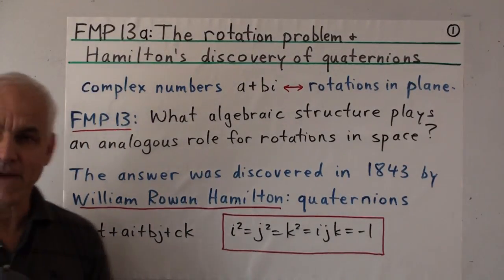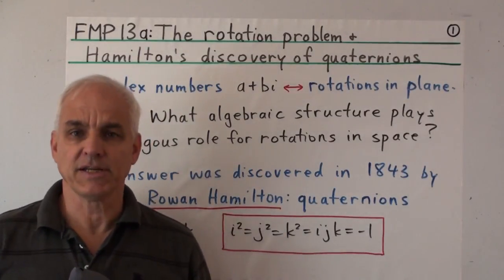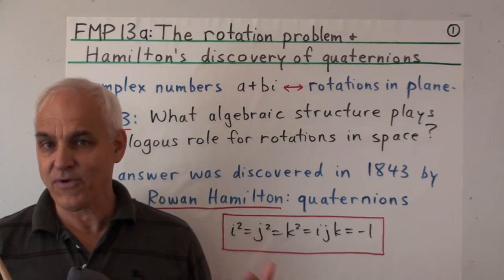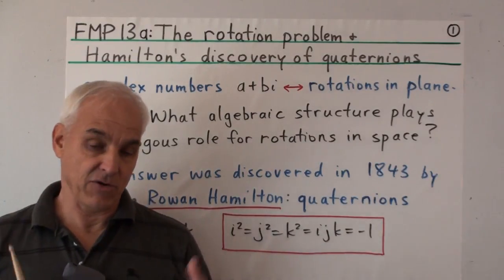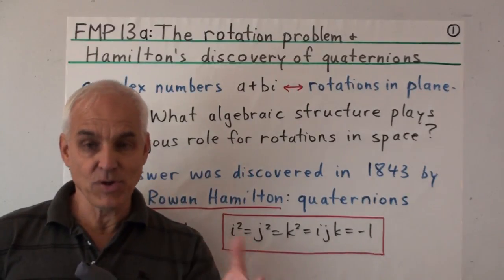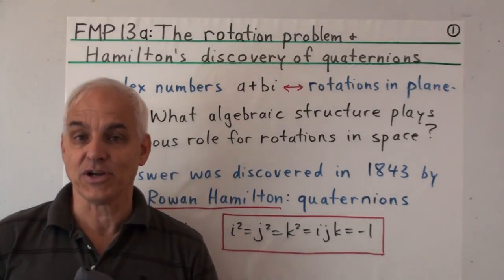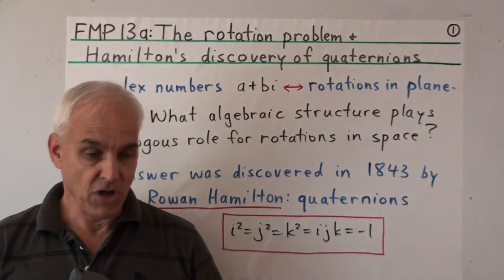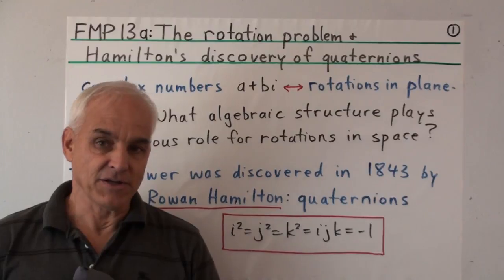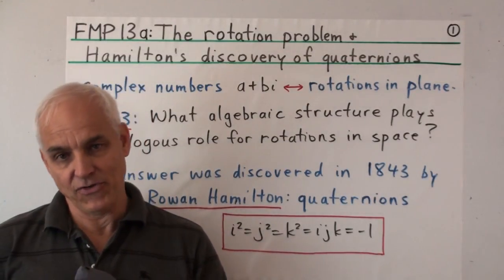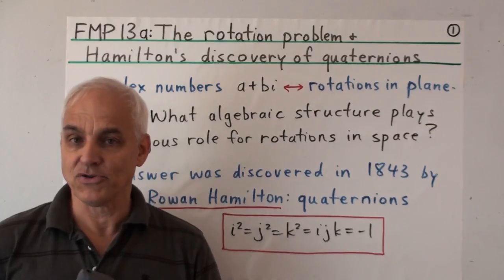Hamilton was also famous for an important insight into classical mechanics. He took the framework of Lagrange for understanding Newton's laws and twisted it in an important new direction to give us the Hamiltonian formulation of classical mechanics, which not only brought into being a subject called symplectic geometry, but was also a very important contributor to the 20th century development of quantum mechanics.